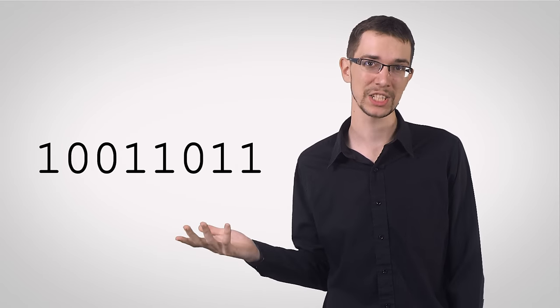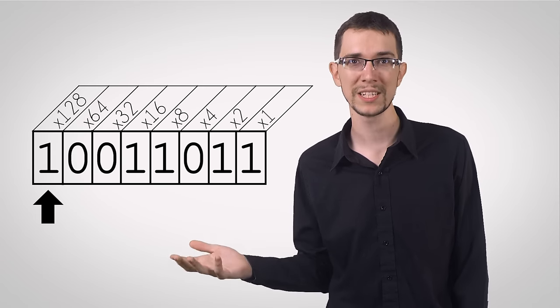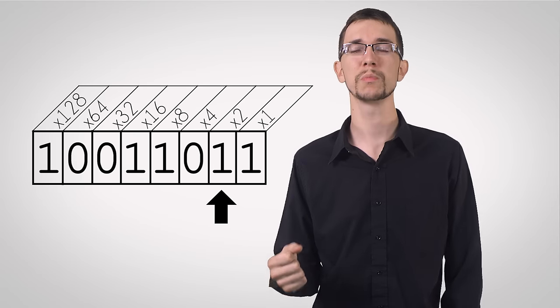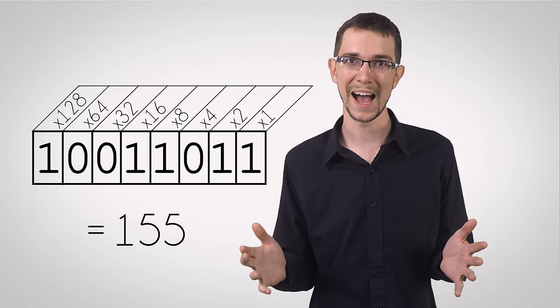So, a sequence like this would equal 1 times 128, plus 1 times 16, plus 1 times 8, plus 1 times 2, plus 1, which is 155.